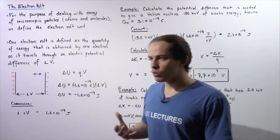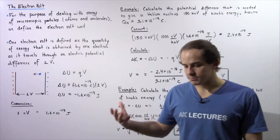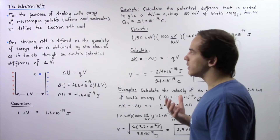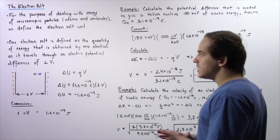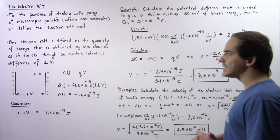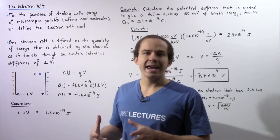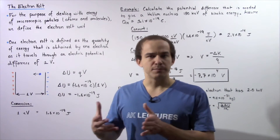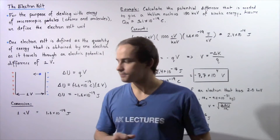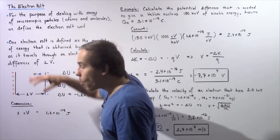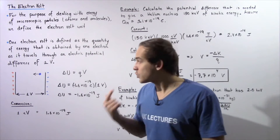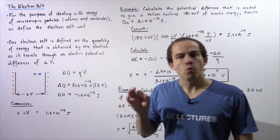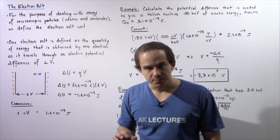So for the purpose of dealing with microscopic particles such as atoms, molecules, protons, neutrons, and electrons, we define the electron volt, which is a unit of energy. One electron volt is defined as the quantity of energy that is gained by one electron as it travels through a potential difference of one volt. When one electron travels through a potential difference of one volt, it is said to gain one electron volt of energy.